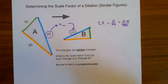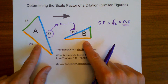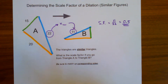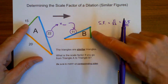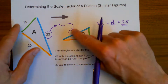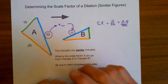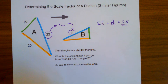Always think ahead when doing these problems. First, ask whether the scale factor is going to be greater than one or less than one — going the wrong direction is the most common mistake. And second, before you calculate, make sure to match up the corresponding sides. I hope this helps when you are trying to determine scale factors.